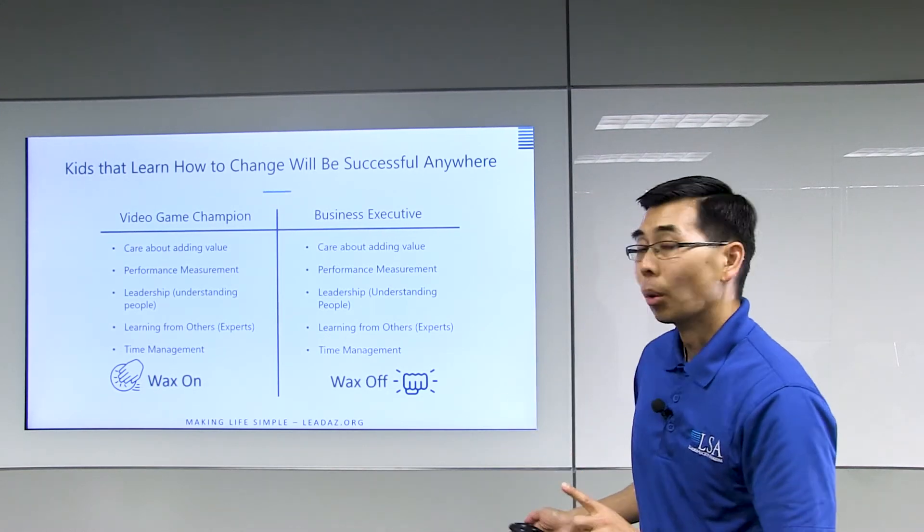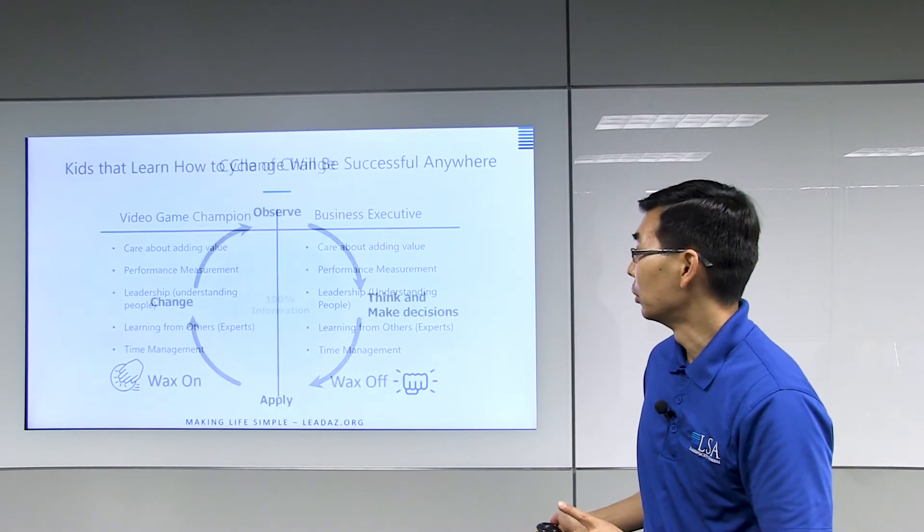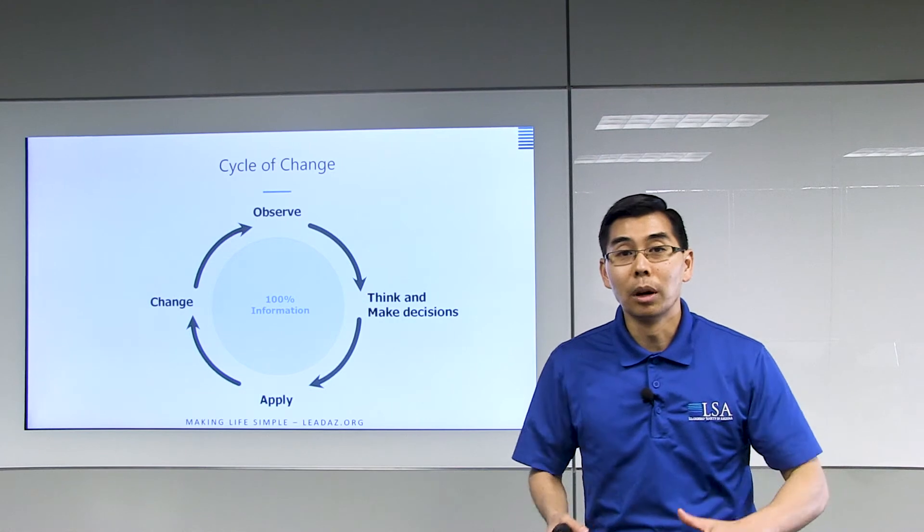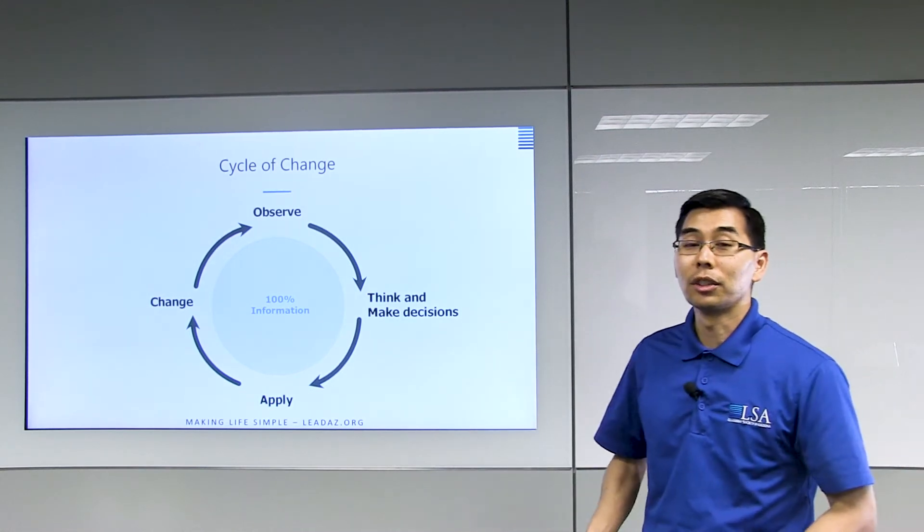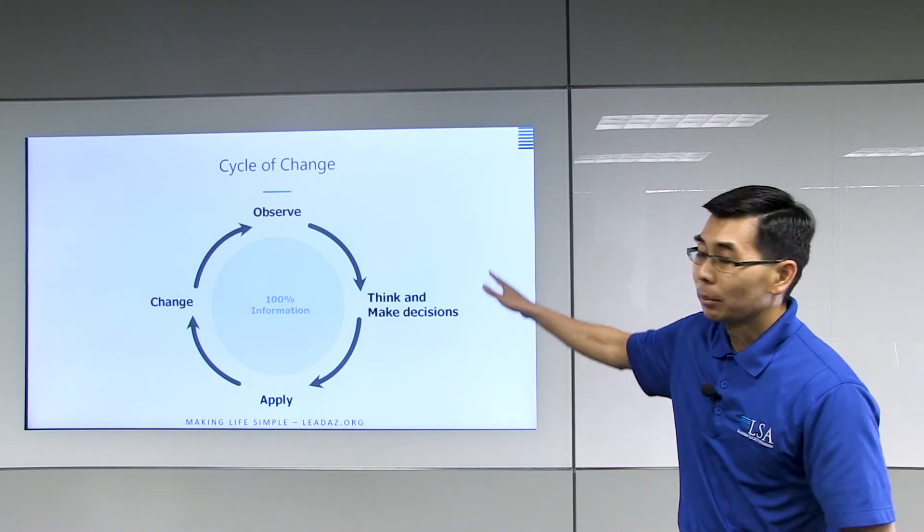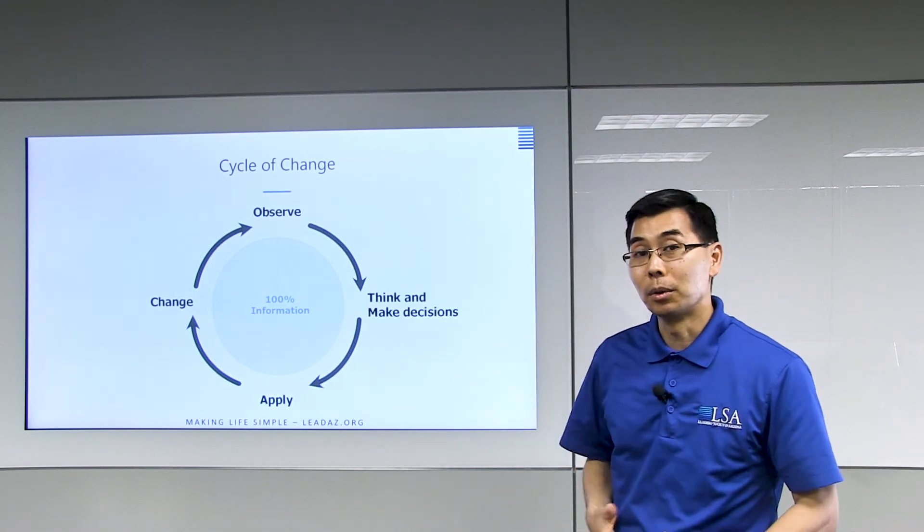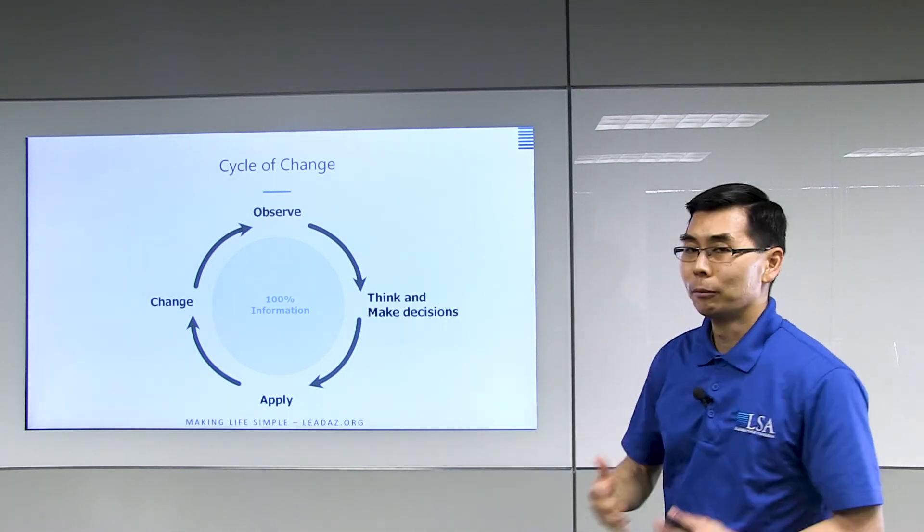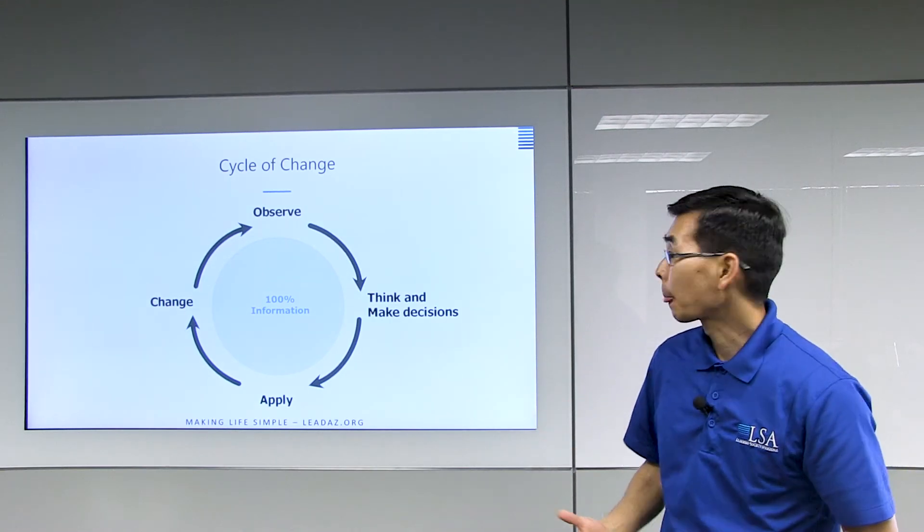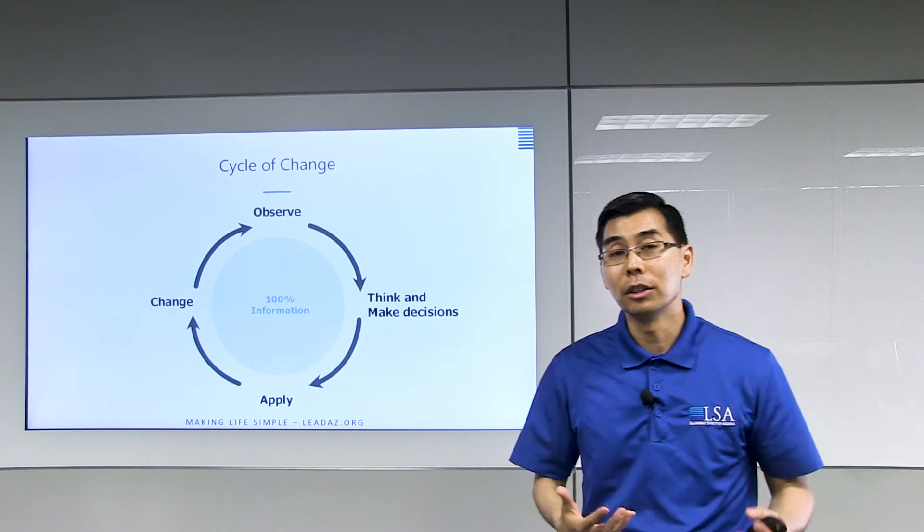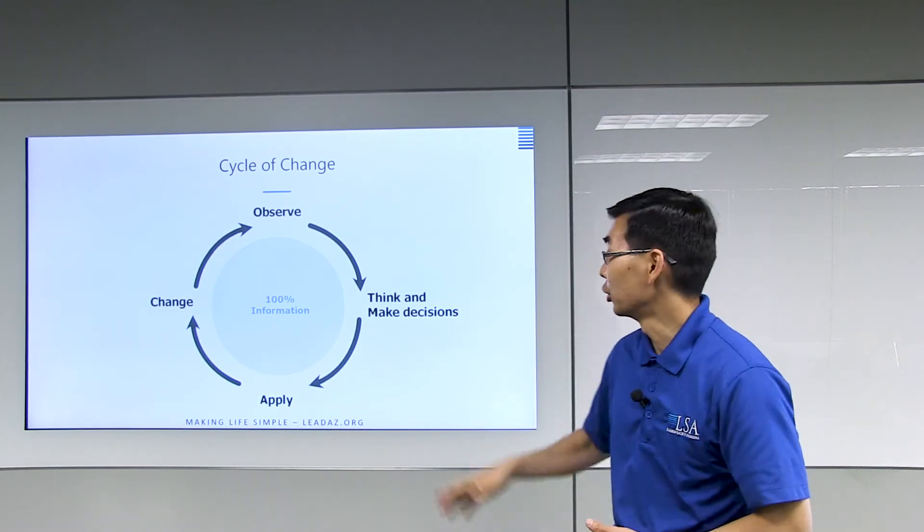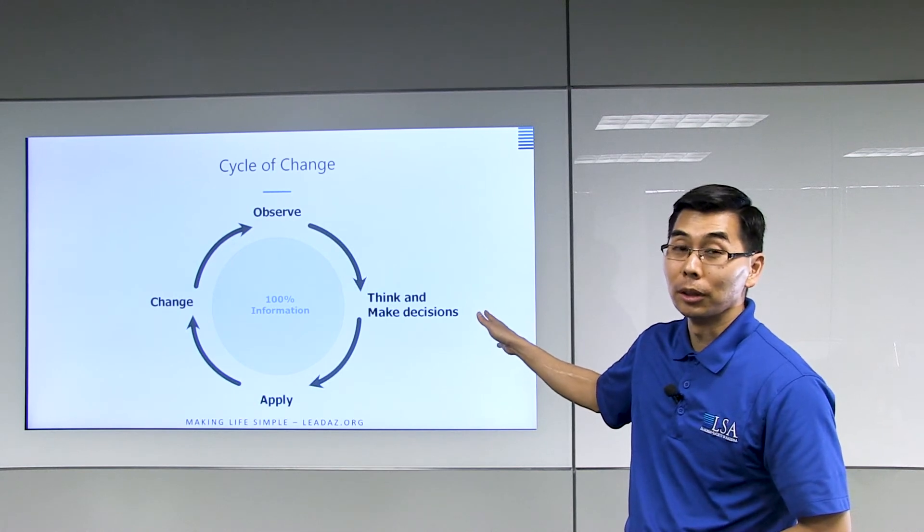In order to truly change and improve, they have to do something. So this is what we call the cycle of change or the cycle of learning, and it shows all the steps that someone has to go through to improve. First, you have to observe something in life, you have to observe some type of information. Then you have to think and make decisions about it. Of course, as we learned, we want to minimize the thinking and decision-making with principle two: simplicity structure.